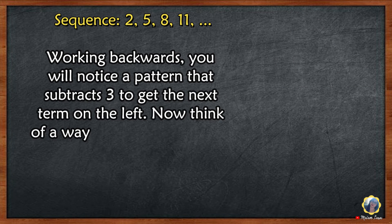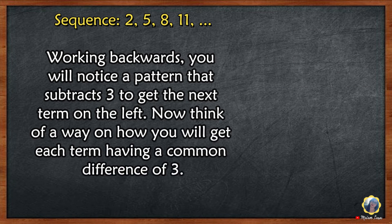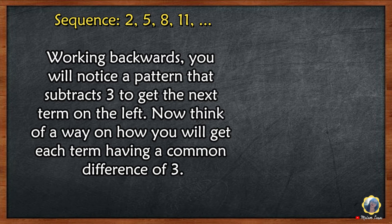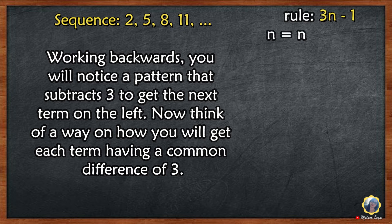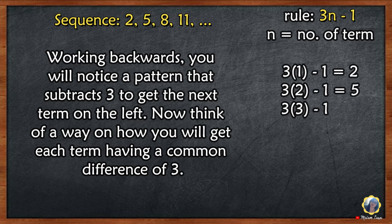Another example: sequence 2, 5, 8, 11, and so on. Working backwards, you will notice a pattern that subtracts 3 to get the next term on the left. Think of a way to get each term having a common difference of 3. Rule: 3n minus 1.